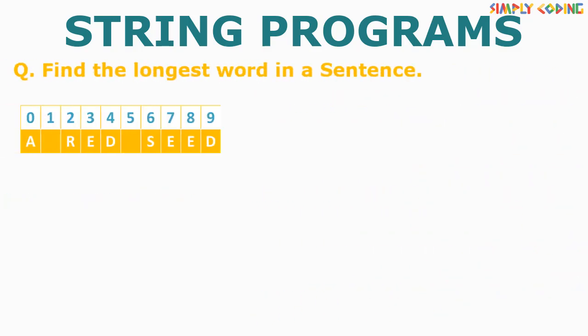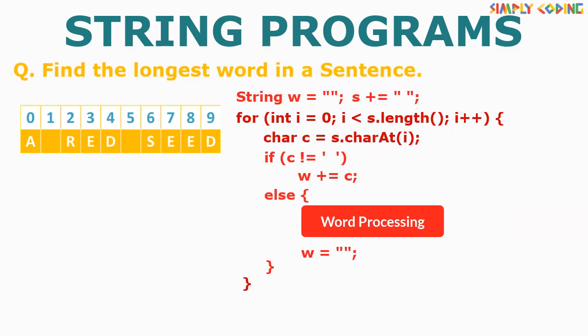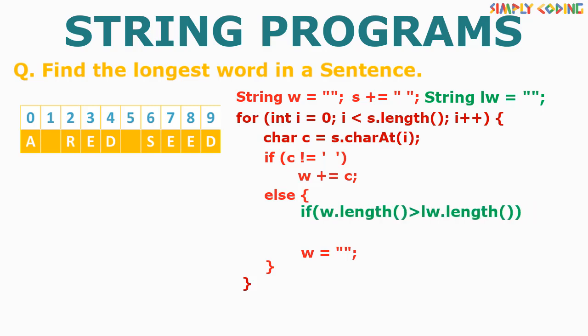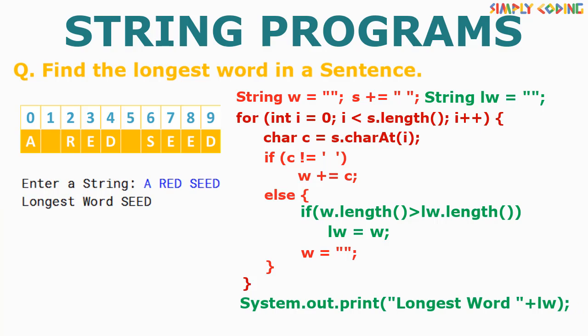Or the program could be to find the longest word. We again take our template. Here we declare a variable to store the longest word before the loop. When we get a word, we compare if the length of it is greater than the longest word we have stored outside. If yes, the new word becomes the longest word. Once we have finished comparing all words, we print the longest word outside the loop. This gives us the required program.